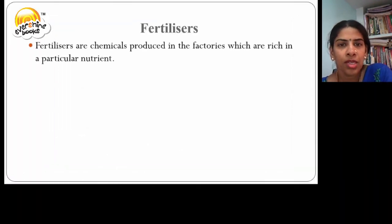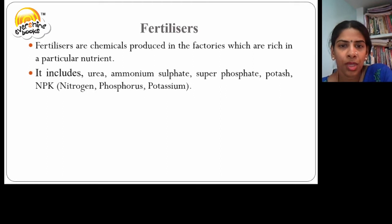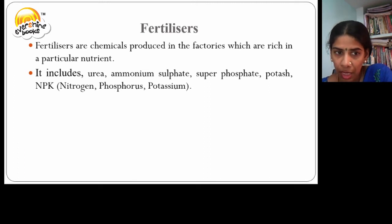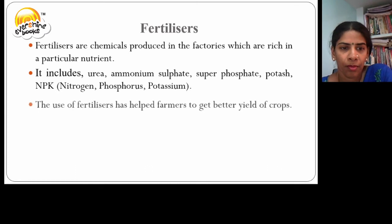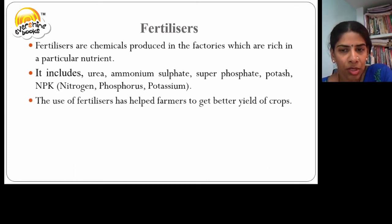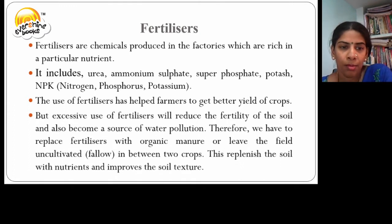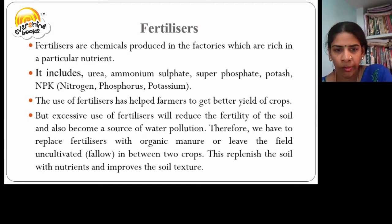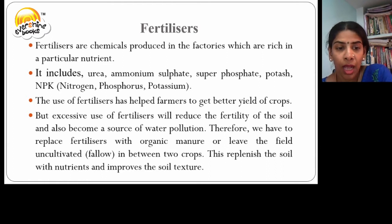Fertilizers are chemicals produced in factories which are rich in particular nutrients. These include urea, ammonium sulfate, superphosphate, potassium, and NPK, that is nitrogen, phosphorus and potassium. The use of fertilizers has helped farmers to get better yielding of crops. But excessive use of fertilizers will reduce the fertility of the soil and also become a source of water pollution. Therefore, we have to replace fertilizers with organic manure and leave the field uncultivated between two crops. This helps the soil to replenish with nutrients and improve its texture.